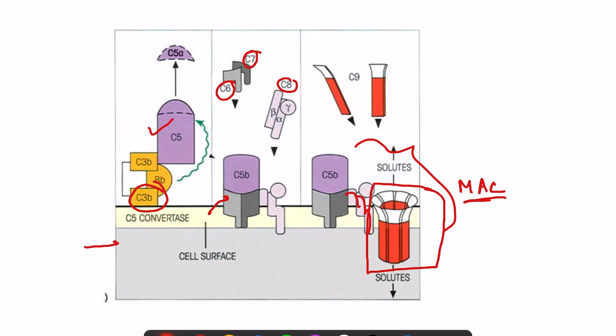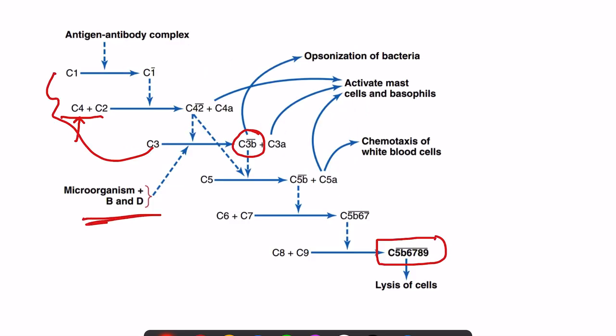That covers complement protein structure and activation. The acquired immunity component — the antigen-antibody complex — activates complement proteins, as does the innate immunity component through direct binding to the microorganism. The cascade produces various products: C4A, C3A, C5A, and ultimately the membrane attack complex, all important for complement protein functions.